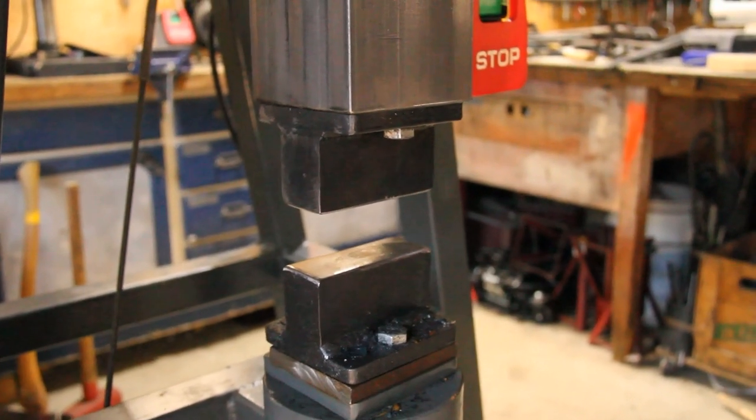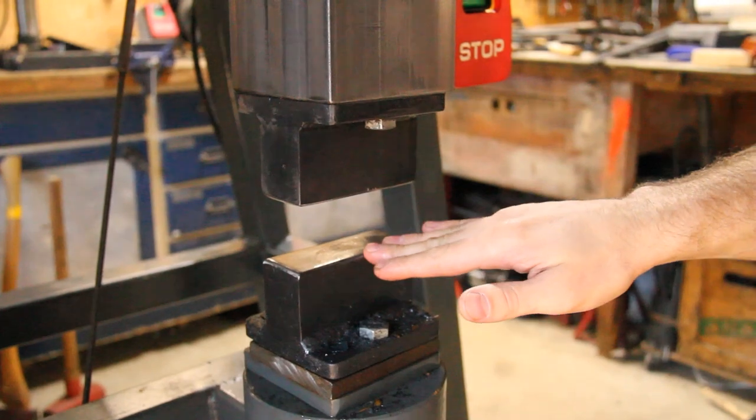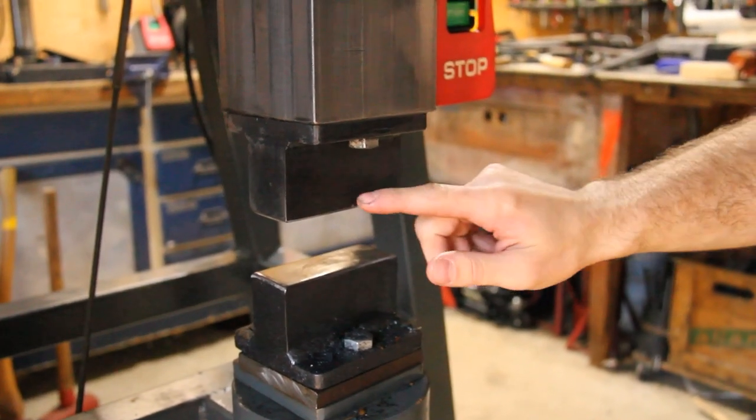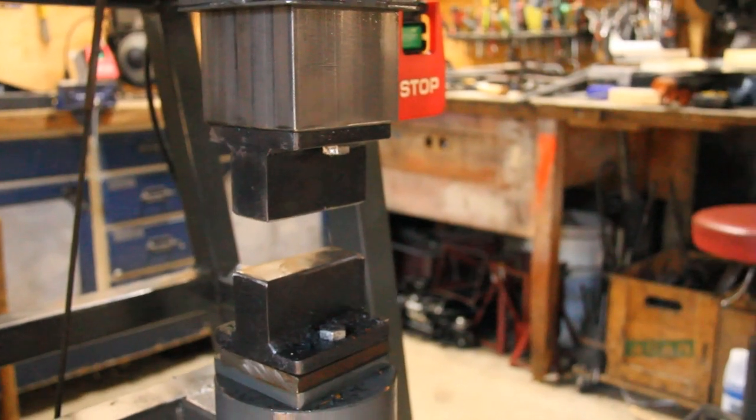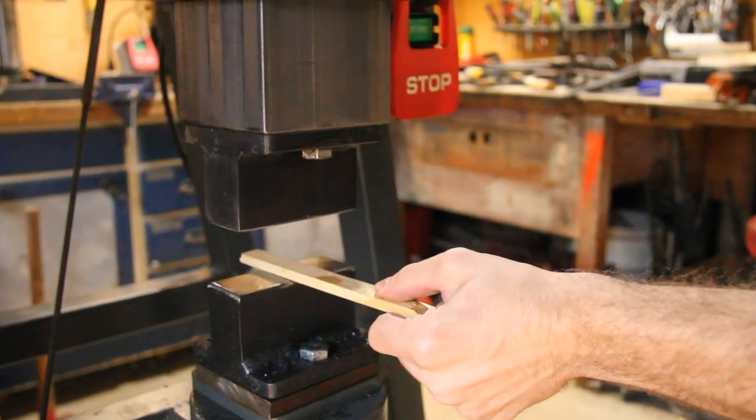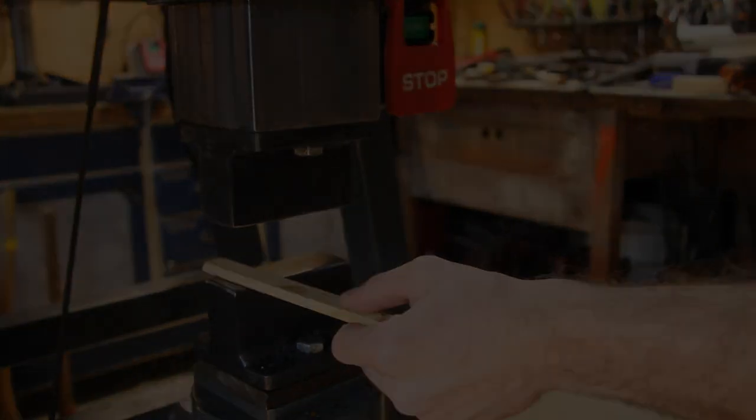The last bit of precaution you should take is when running the hammer, you should try to never let those two hardened steel dies hit each other. Because they are hardened, they could break. So you should at the very least put a piece of wood or hot steel between these two.